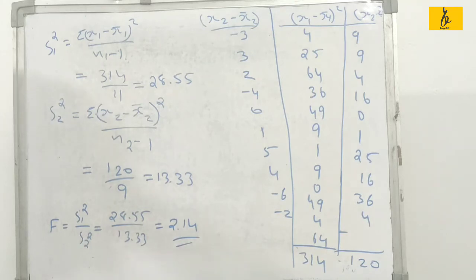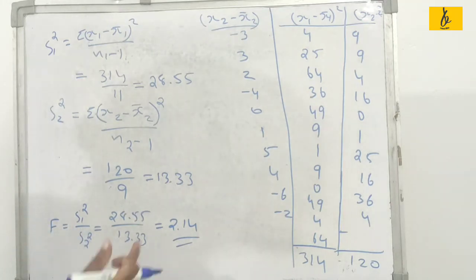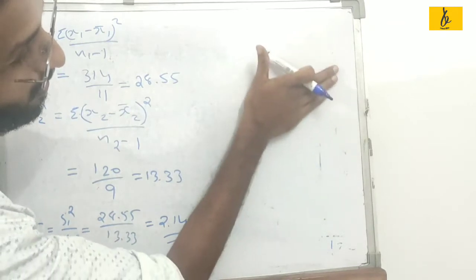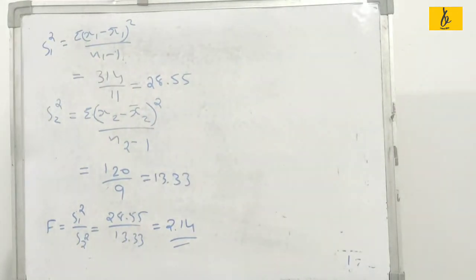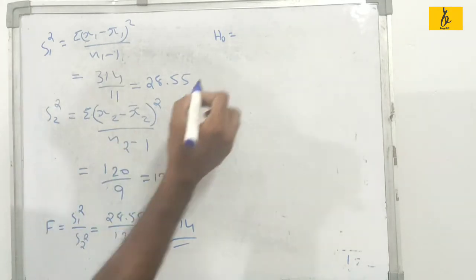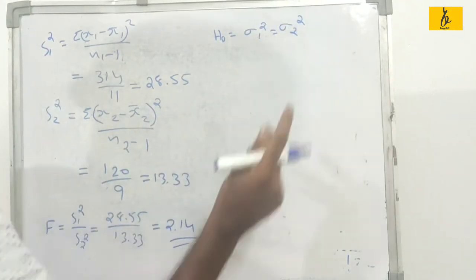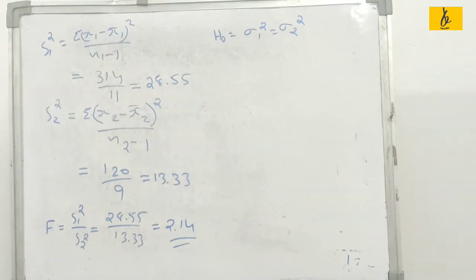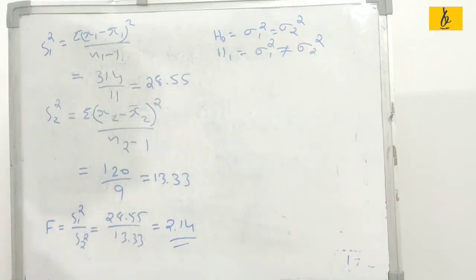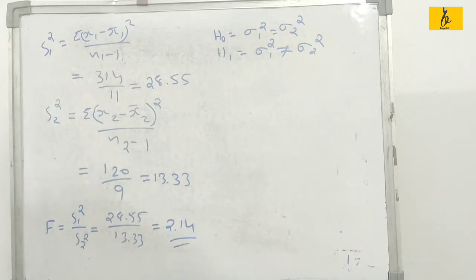The assumption equation: we need to test the assumption. Sigma 1 square is equal to sigma 2 square — there is no significant difference between the two variances. This is the null hypothesis H0. The alternative hypothesis is sigma 1 square not equal to sigma 2 square. The test statistic F ratio is 2.14.